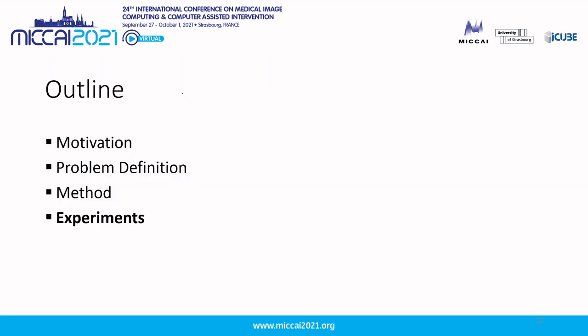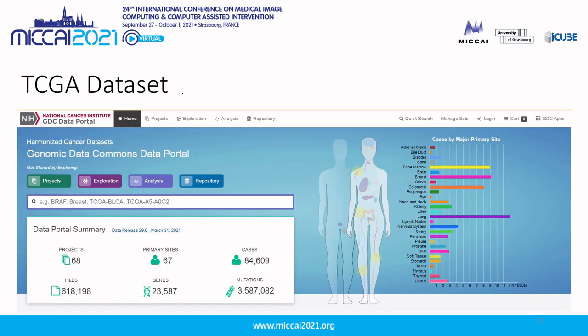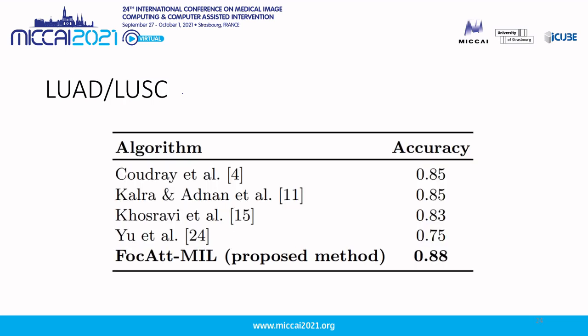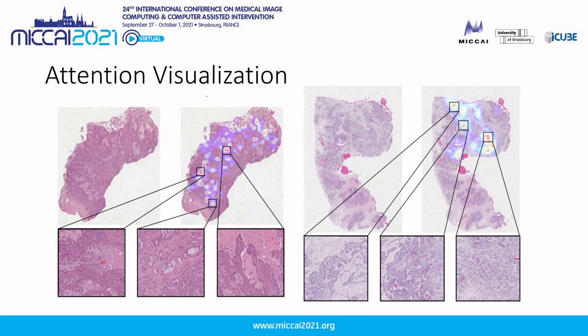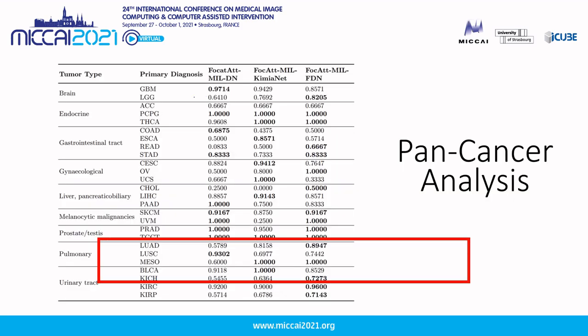Continuing to the experiment section, we utilize one of the largest public archives of whole slide images, the Cancer Genome Atlas or TCGA dataset. The first experiment involves classification of lung adenocarcinoma (LUAD) versus lung squamous cell carcinoma (LUSC). The proposed approach, FOCAT-MIL, performed really well compared to existing state-of-the-art methods. Visualizing the attention values shows that the model is able to focus on histologically relevant areas. We also trained our method on a large-scale dataset containing up to 7,000 whole slide images for pan-cancer classification, achieving very high accuracy for cancer subtype classification.